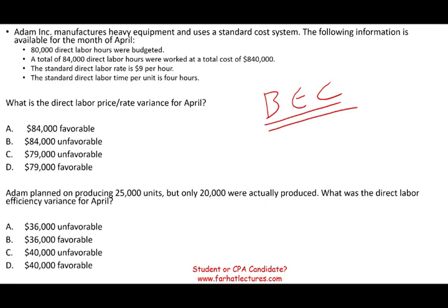You have favorable and unfavorable. You have labor, you have material, you have efficiency and rate, you have quantity and price.